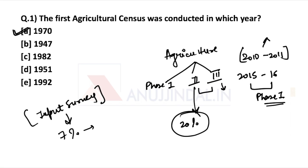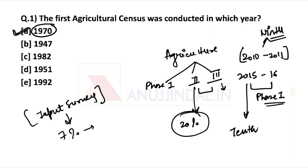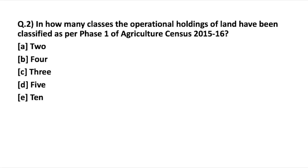The 2015-16 census is the tenth census. Remember this — 2010-11 was the ninth census, and the first census was conducted in 1970. Moving on to the next question.